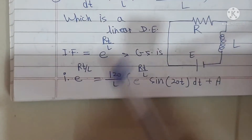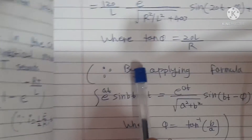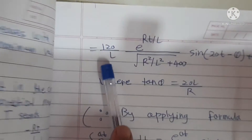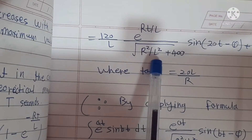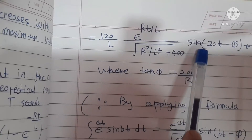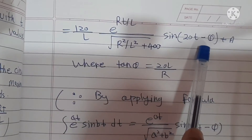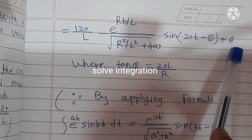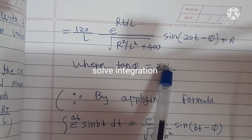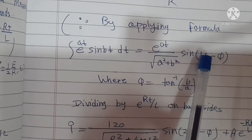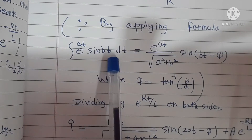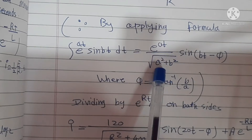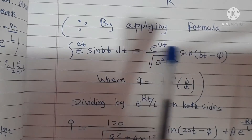After substituting the values into the standard formula, the integration gives: (120/L)·e^(Rt/L) / √(R²+400L²) · sin(20T − φ) plus A, where tan(φ) equals 20L/R. The formula involving e^(AT)·sin(BT) is applied here.